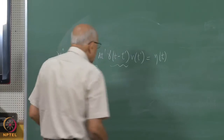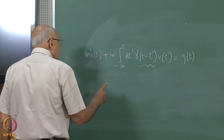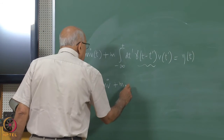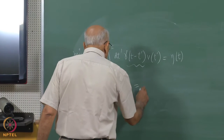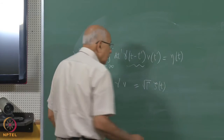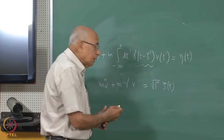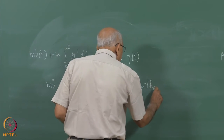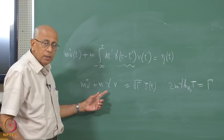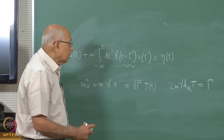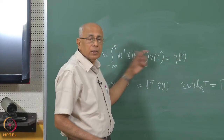All you have to do is ask what the second fluctuation-dissipation theorem says in this case. Recall the ordinary Langevin equation: M V-dot plus M gamma V equals square root of gamma times zeta(t), where zeta is Gaussian white noise with zero mean and a delta function autocorrelation. Consistency required that 2 M gamma k_B T equals capital Gamma. That was the second fluctuation-dissipation theorem, relating the dissipation gamma with the strength capital Gamma of the noise fluctuations.